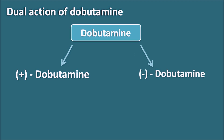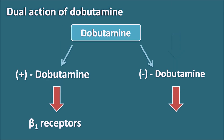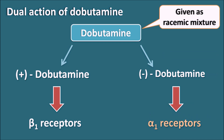The plus Dobutamine is selective for the beta-1 receptors, whereas minus Dobutamine is selective for the alpha-1 receptors. Even though it can have two isomers, Dobutamine is always given as a racemic mixture, and because of this it can show its dual action on both beta-1 and alpha-1 receptors. However, it is more selective for the beta-1 receptors with little effect on alpha-1 receptors.